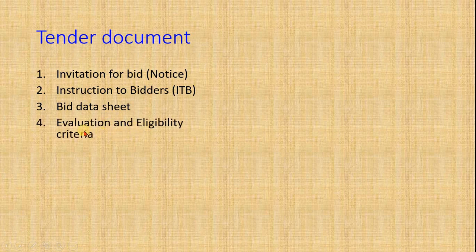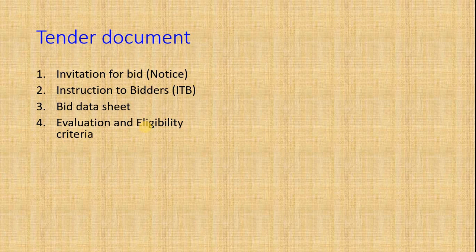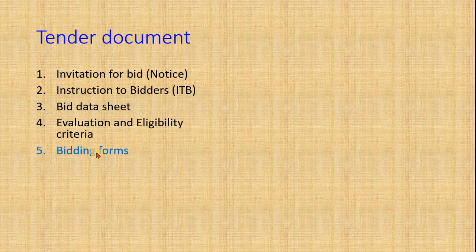Evaluation and Eligibility Criteria contains the criteria which must be fulfilled by the bidder to be eligible and evaluated for the bid. The evaluation criteria may include submission of a tax document, business registration form, registration, nationality, and whether the bidder has ever been declared ineligible by any government or UN agencies. Based on whether those criteria are fulfilled, who is eligible and how they are evaluated is defined in this document.